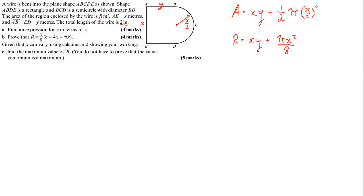The next part is we need a formula for the perimeter — the length of the wire going around the outside. The perimeter is going to be two y's — these two sides — so 2y, plus x across the top, plus half pi x for the semicircle arc.